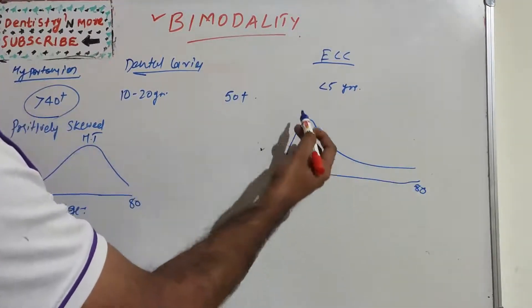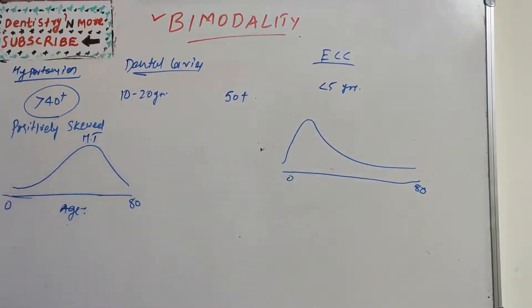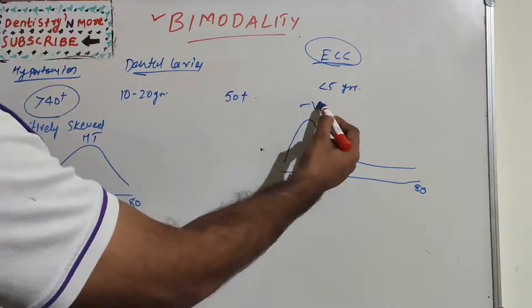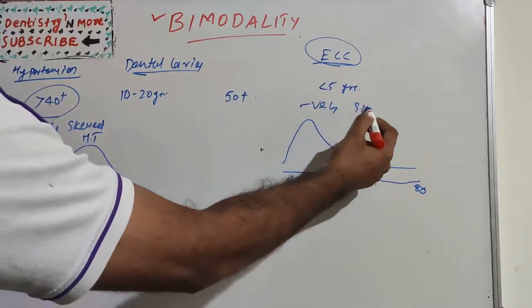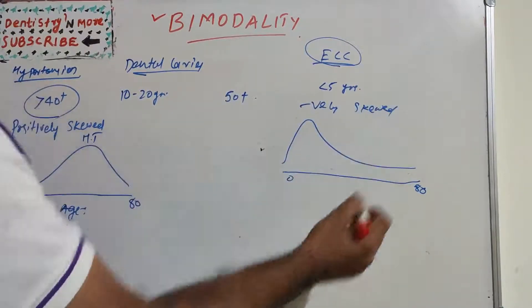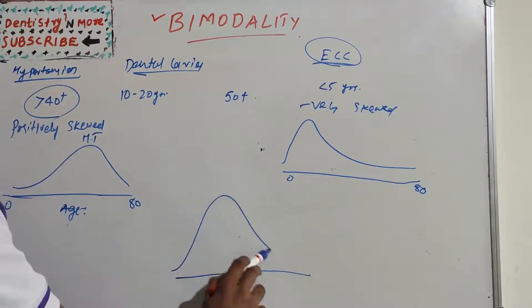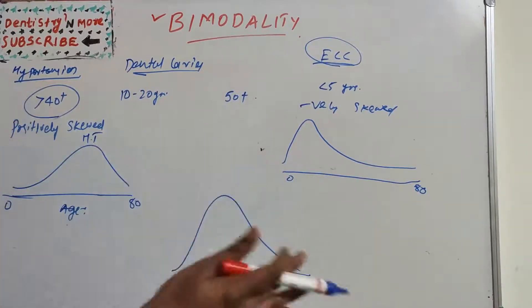If you take this one, we take 0 to 80, so 0 to 5, most of the early childhood caries are there. This is known as negatively skewed. And we have learned long back, this is a normal curve. This is equally distributed.